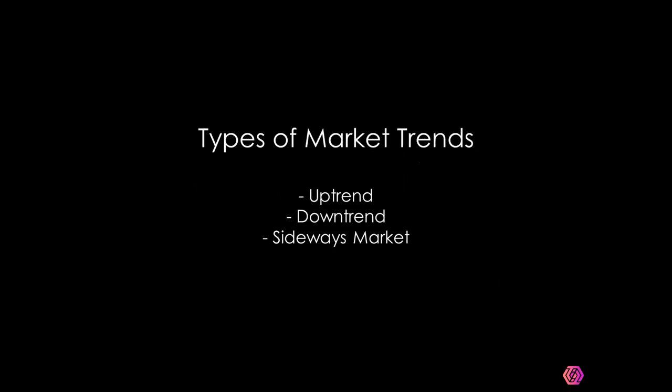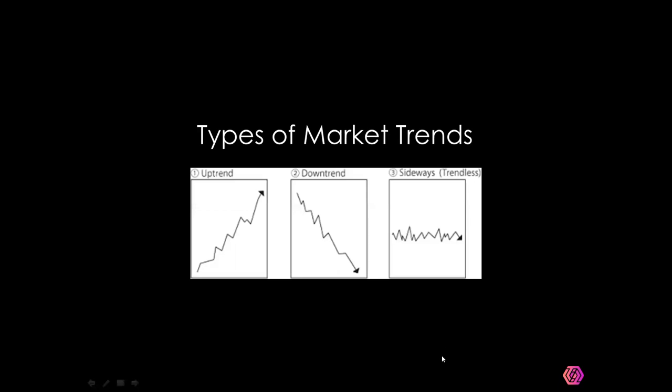When it comes to types of market trends, we have up, down, and sideways — those are the only three, even if they come in different variations. The first diagram is an uptrend progressing upward, the second is a downtrend progressing downward, and the third is the sideways market, which is moving sideways.